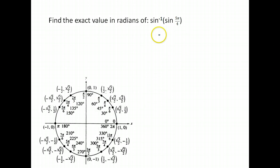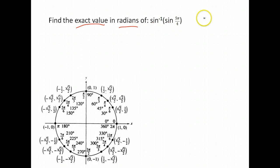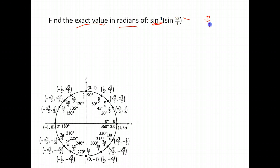When it's not in the appropriate range, consider this example: find the exact value in radians of inverse sine of sine of 5π/4. It would be nice to just cancel them out and say the answer is 5π/4, but we have to keep in mind that for inverse sine, our answer must come out as something between negative π/2 and π/2.